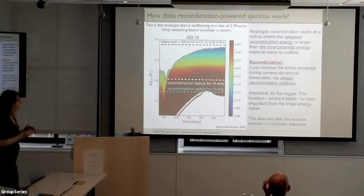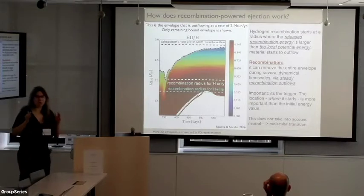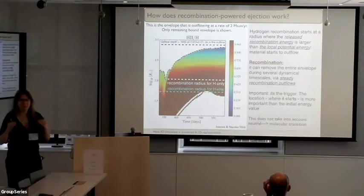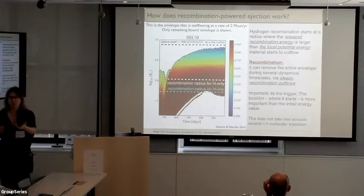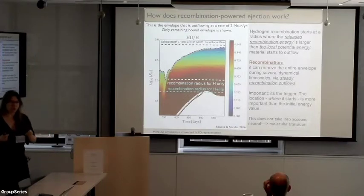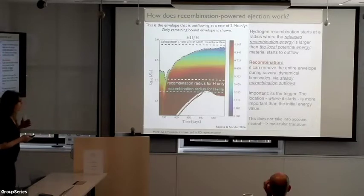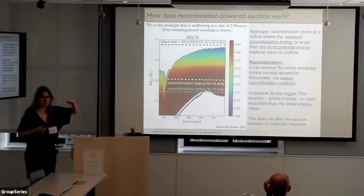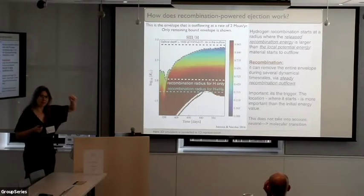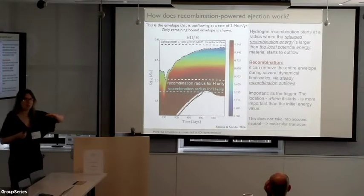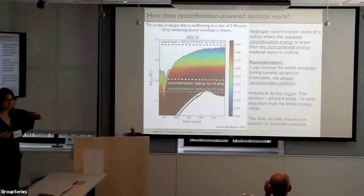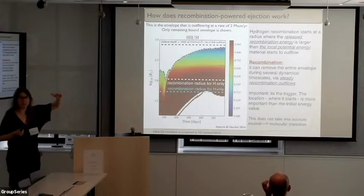I work on recombination, so let me explain how it works. Recombination is potential energy — it's not given to you right away, you have to trigger it. What's most important is to trigger it when it can actually do something. What I call the recombination radius is the radius above which, if an atom recombines, the energy released is higher than the potential energy holding it. If it recombines before this radius, the potential energy is too high and the gas cannot reach infinity. If it recombines above, it can.